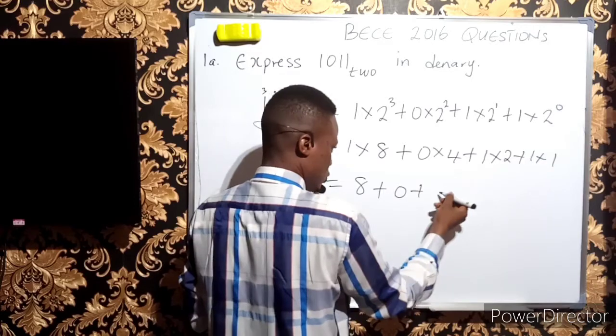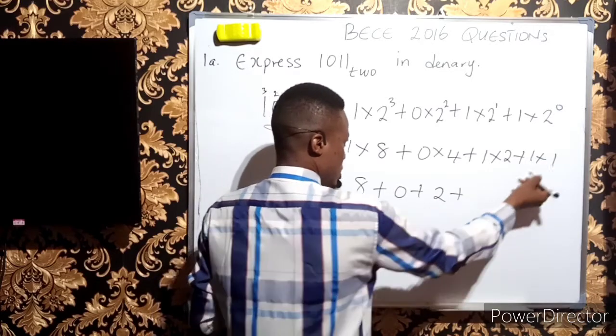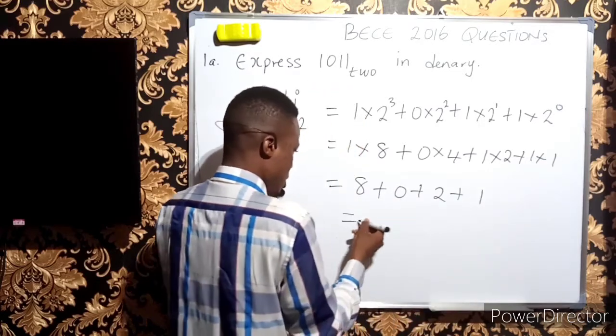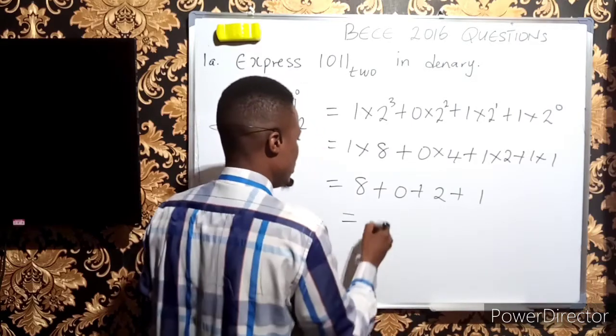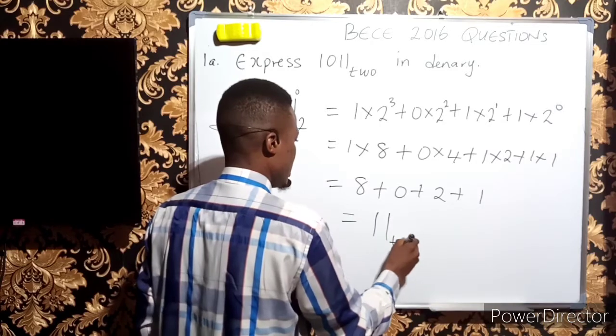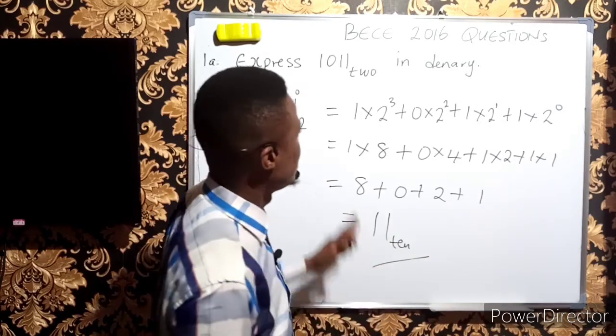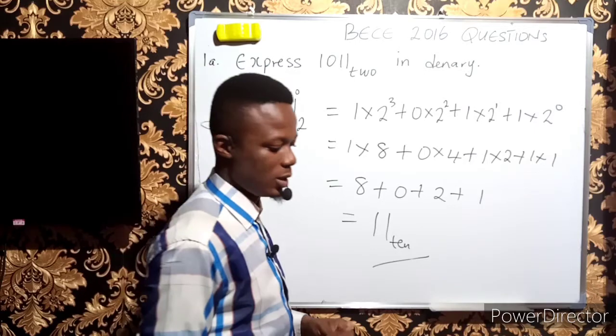Adding together: 8 + 2 is 10, and 10 + 1 gives us 11 base 10. This is the answer: 11 base 10. So let's take the second question.